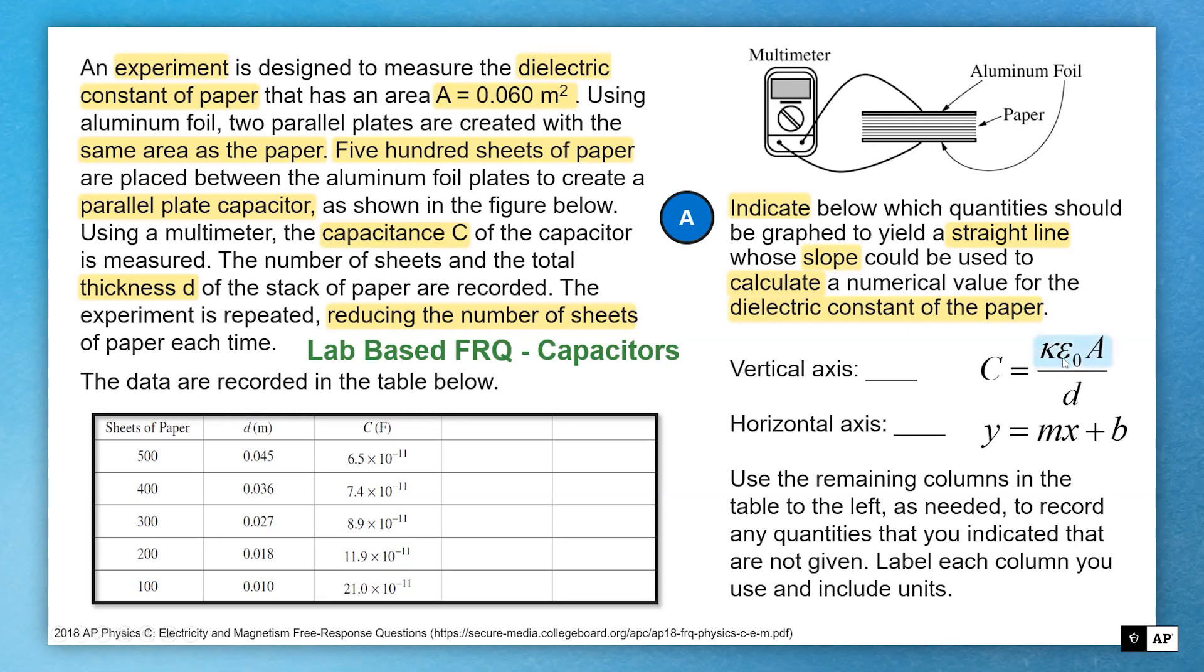Well, this kappa epsilon not A term is my M, which if C then has to be my Y for my vertical axis, and then my horizontal axis is one over D. Doing all of this is just worth one point by picking those axes.